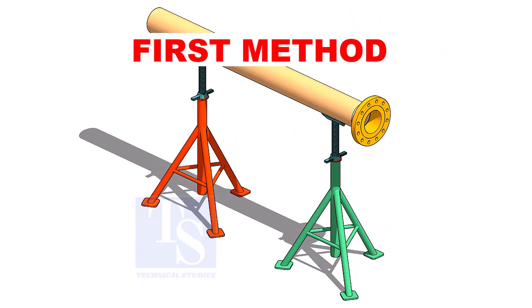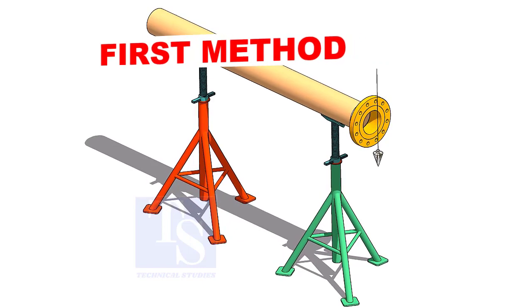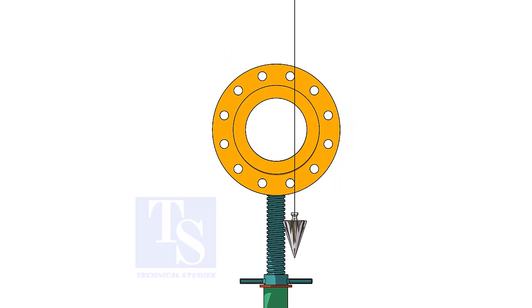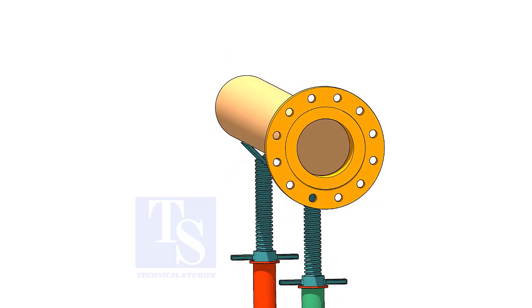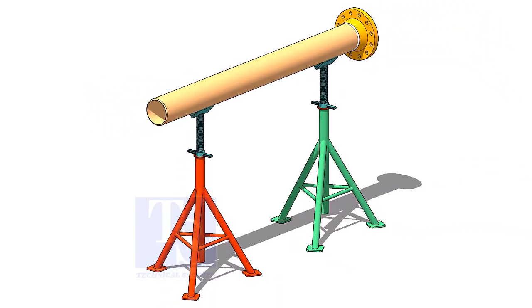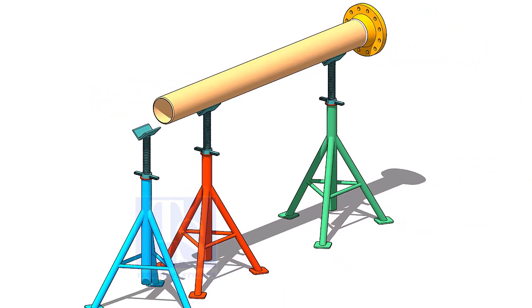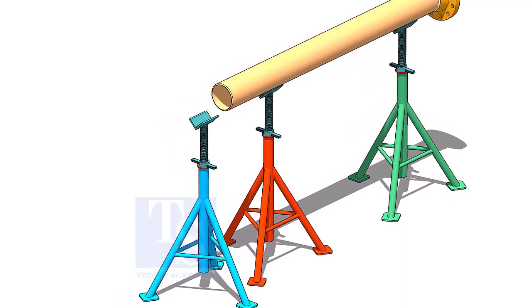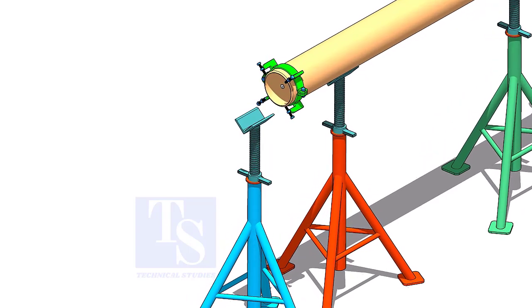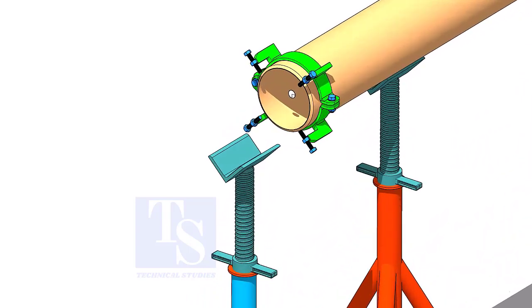Correct the plumb of the flange and arrest the pipe. Fix the pipe clamp on the pipe.